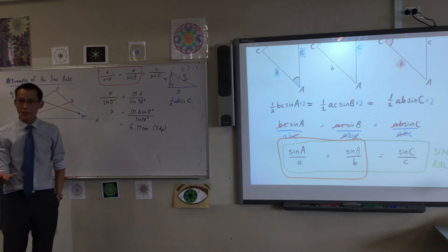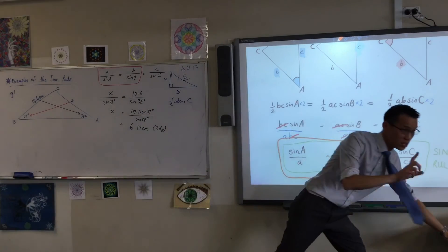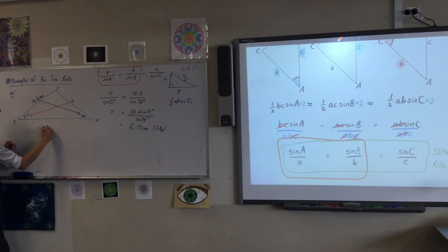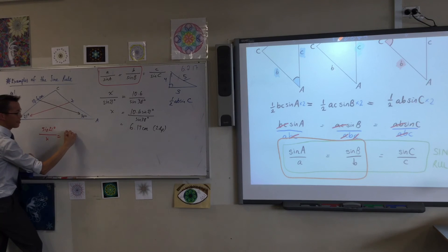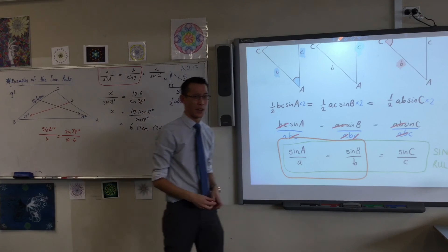Now what would have happened had I used that version? I wouldn't get the wrong answer, but just watch. All the numbers are the same, it's just going to look like this. There's the sine whatever on this, and then there's the sine of the other angle on this. Now it's still going to give you the right answer, but do you see why I'm trying to avoid it?